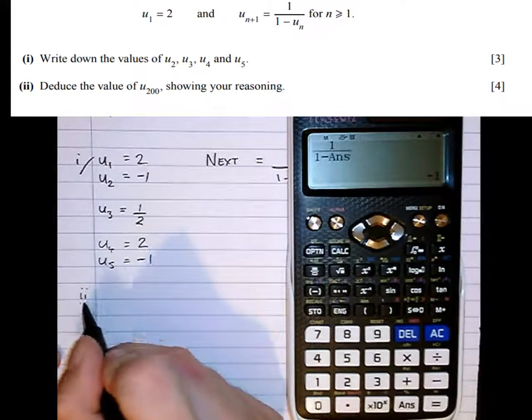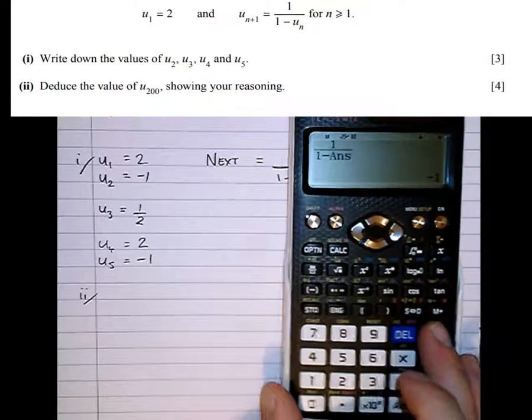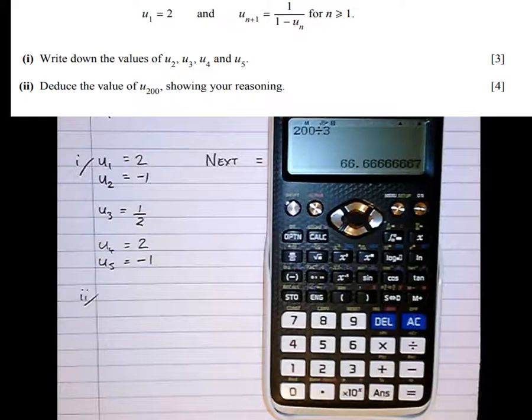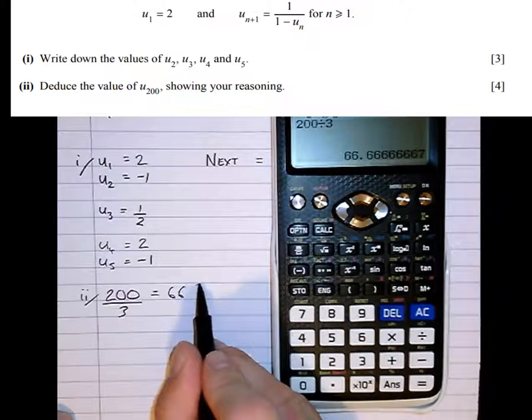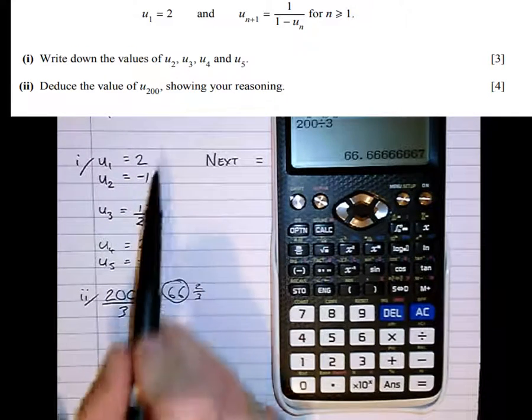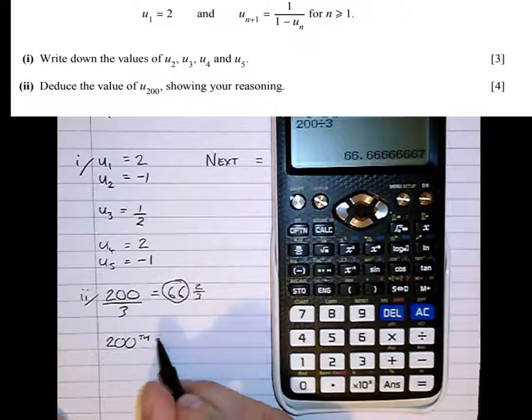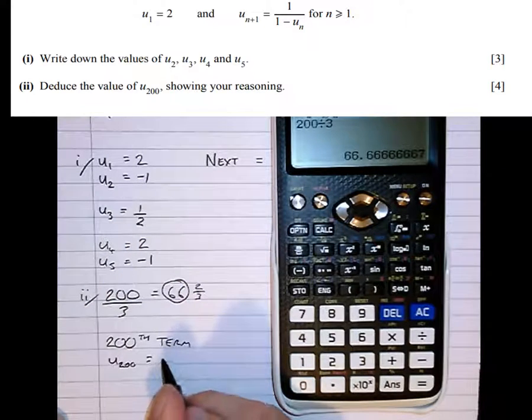So part 2. Deduce the value of U200, showing your reasoning. Well, every three terms it repeats. We want to see how many of these triplets we can pull out of 200. So 200 divided by 3 is 66 and 2 thirds. That means 66 of these whole cycles will get out with two numbers left over. So if we start the sequence again, those two numbers are 2 and minus 1. Therefore, the 200th term, or in proper sequence notation, U200 equals the second term of this, which is minus 1.